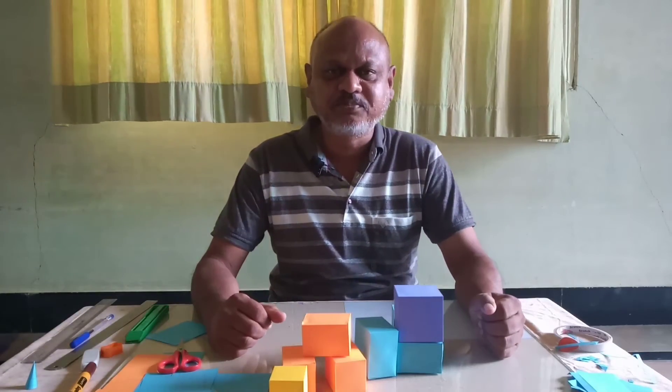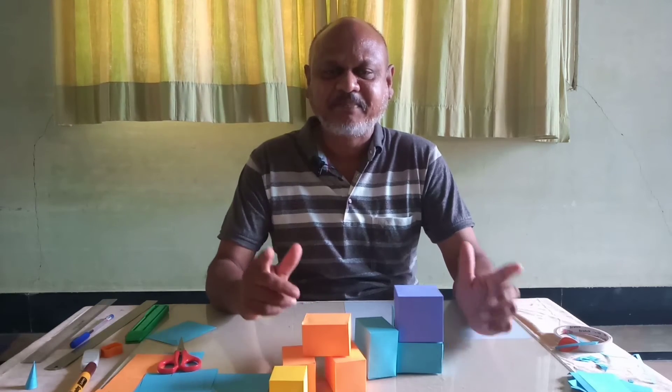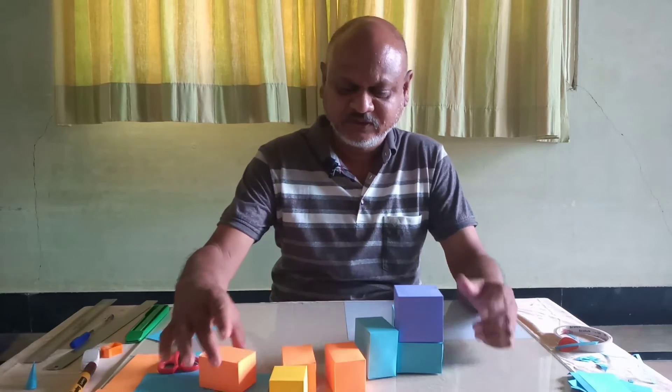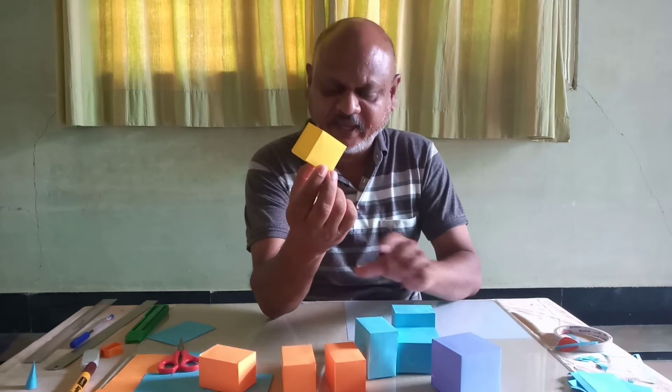We are done. We have prepared all the cubes and the cuboids that are required to explain A plus B whole cubed. I'll show you all these. So this little cube I've called as A.